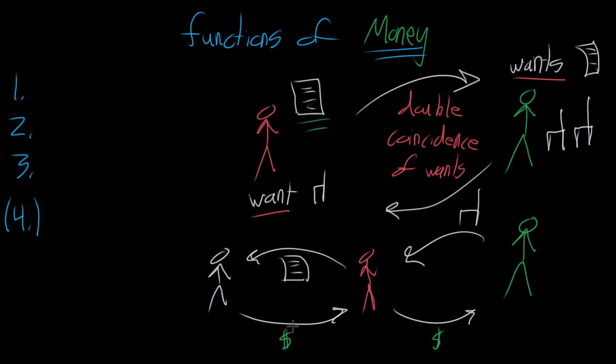And in so far as money serves this function, where it is kind of the universal thing to trade, it's called a medium of exchange. And what that means is anytime that you want to exchange for something, this is the common thing of value that you use to actually trade with the world.